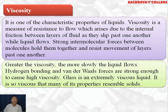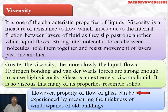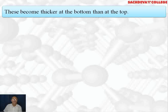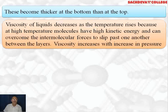Glass is an extremely viscous liquid, also called a supercooled liquid. It is so viscous that many of its properties resemble a solid, and it is called a pseudosolid. The property of flow in glass can be experienced by measuring the thickness of window panes of old buildings — the glass is denser and thicker at the bottom than at the top, showing that glass can flow like a liquid. This is why glass is called a supercooled liquid.